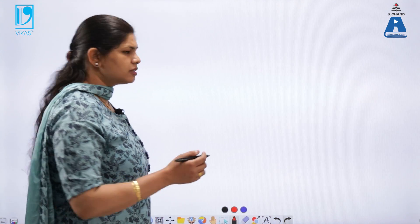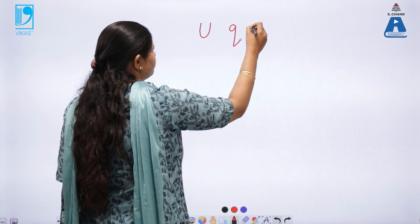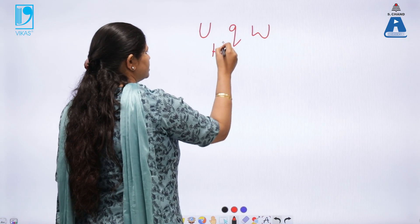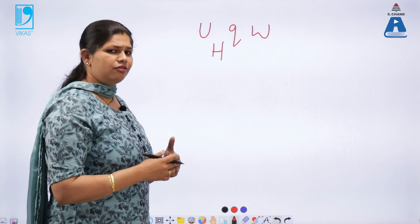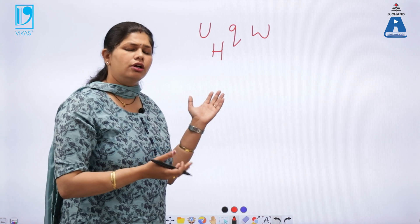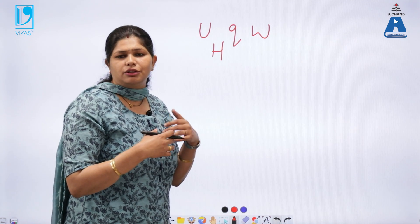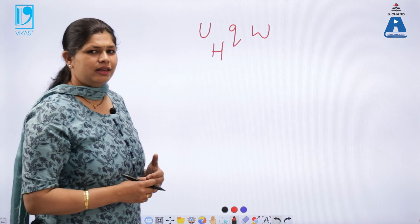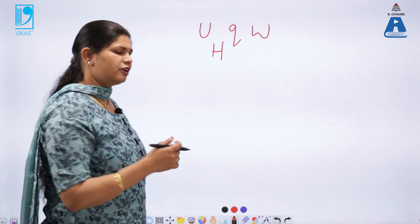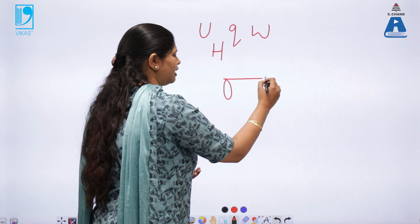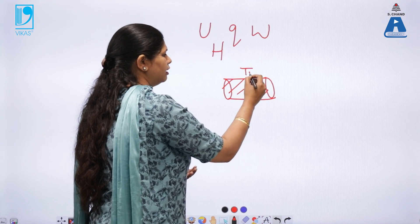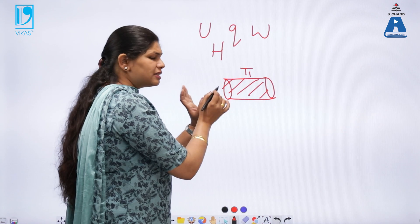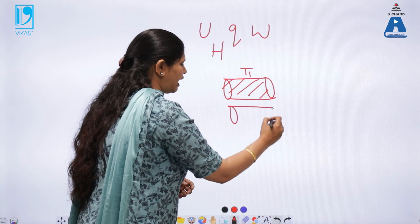The first law of thermodynamics talks about the relation between internal energy, heat, and work. We have also studied enthalpy as a state function or thermodynamic parameter. What is the thing that the first law could not explain, and what was the need for the second law of thermodynamics? According to the first law, if I have one iron rod which is uniformly at a temperature T1, the total energy of the system is conserved.